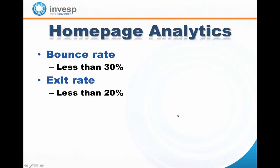Another metric is exit rate. We like to see the exit rate for a main homepage be less than 20%. The bounce rate applies when someone arrives from an external source like Google or social and immediately leaves — we expect about 30% to bounce. Exit rate is a more comprehensive measure: if a visitor viewed another page first and then came to the homepage, we expect about 20% to exit. You can track these quickly in Google Analytics or Omniture.